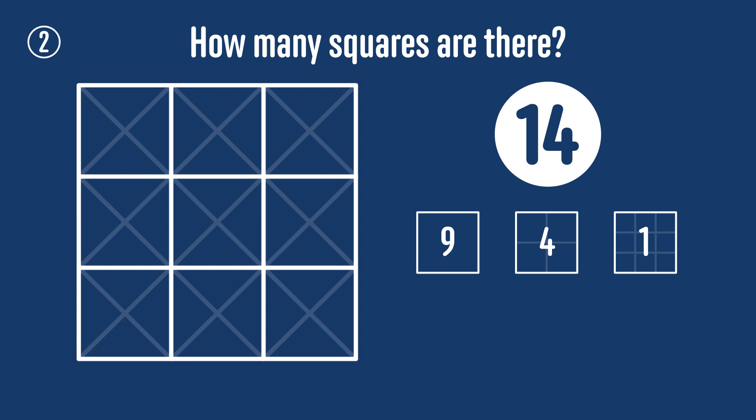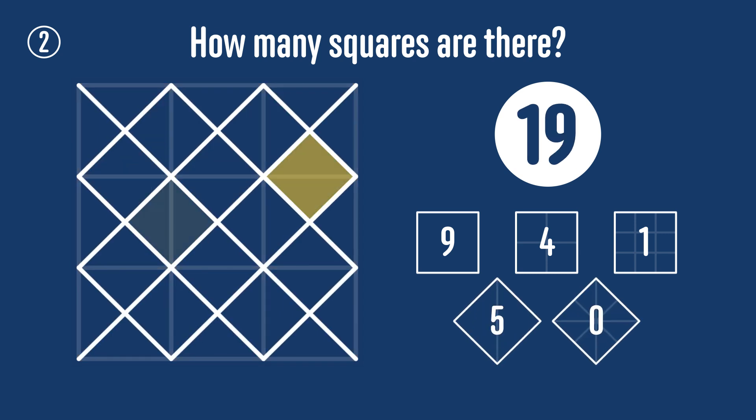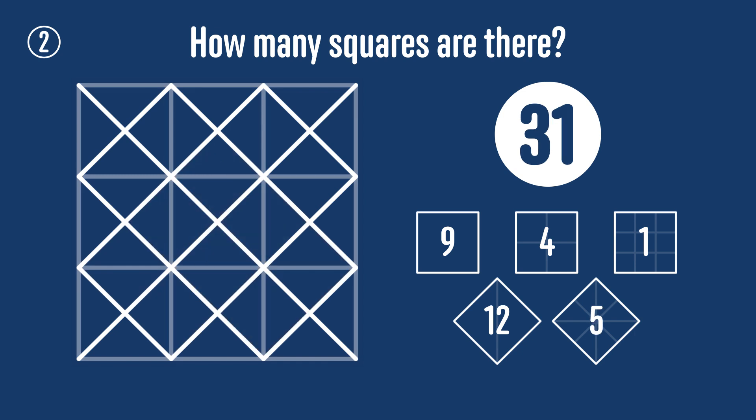Next, we count the squares formed by diagonal lines. We can find 12 one by one squares and five two by two squares for a total of 17 squares of this type. So in total, there are 14 plus 17 or 31 squares. Well done if you got that.